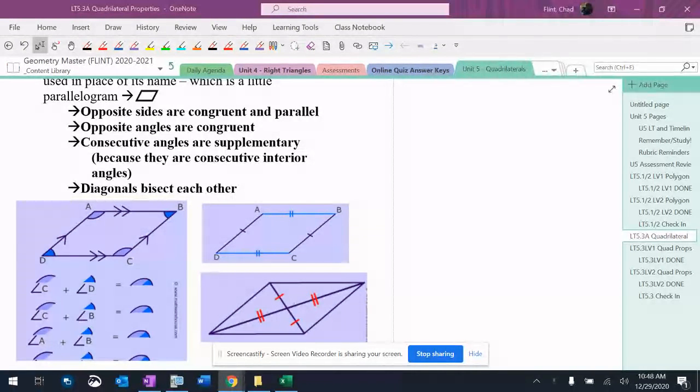Rhombus, rectangle, and square all share this set of properties right here, meaning that these apply to a lot of different things.